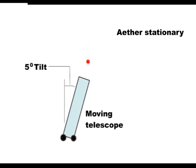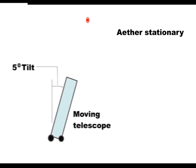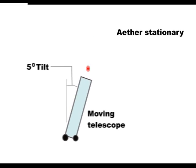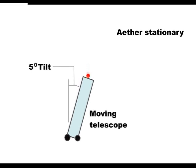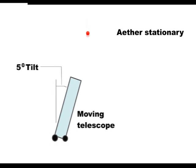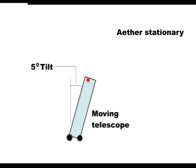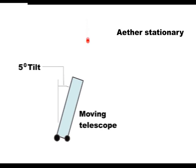So here is the moving telescope filled with water, tipped at 5 degrees, and you can see that the starlight does not now reach the eyepiece at the bottom. This is because the starlight moves much more slowly when passing through water.